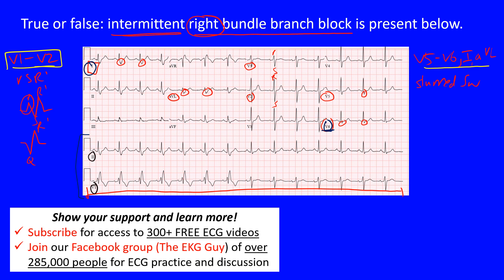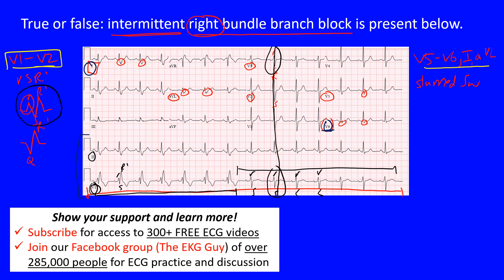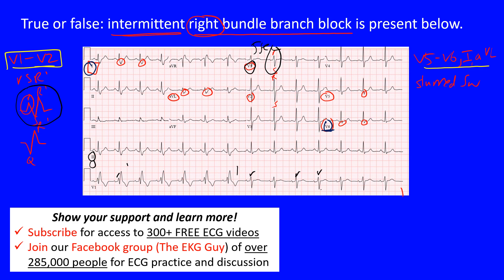Looking at the rhythm strips at the bottom - V1 and V2 - notice that these complexes from here to here are different from those that follow. We have RSR prime complexes, which we said we may see in right bundle branch block, but as you continue through you start to see RS complexes. Things have a temporal relationship on the ECG, meaning this RS complex here is the same one we see in the main V1 lead further along.